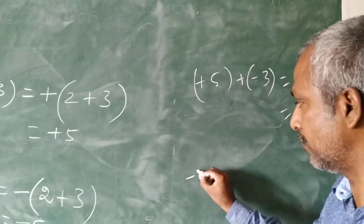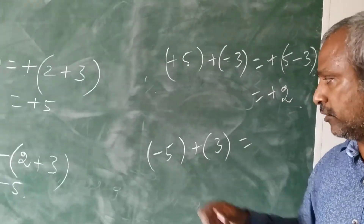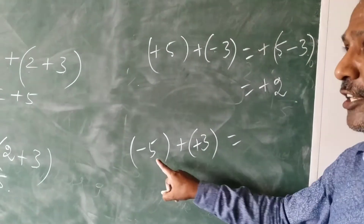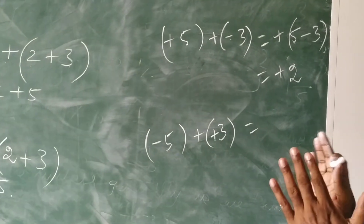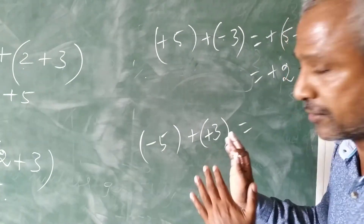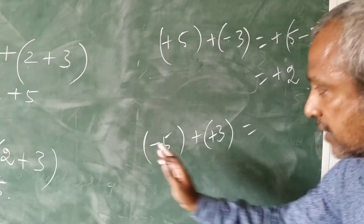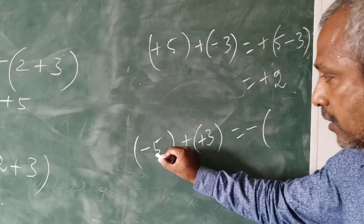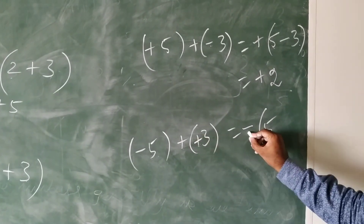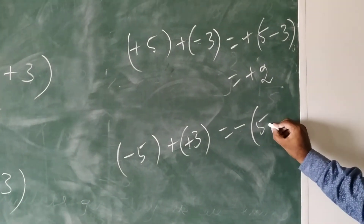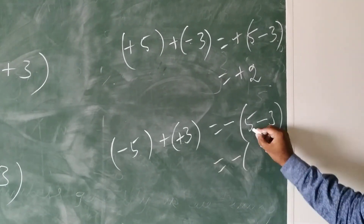Next example: minus 5 plus plus 3. One is a negative integer, the other a positive integer. Look at the values alone — compare 5 and 3. The greater value is 5, so take its sign outside — that is minus. Then write 5 minus 3. The result is minus 2.